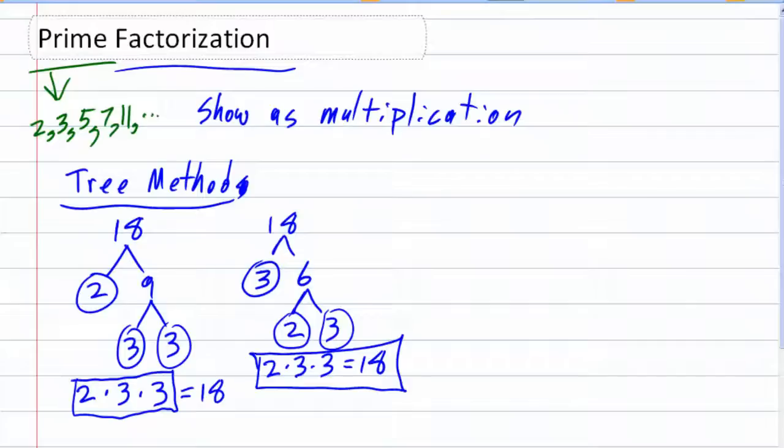One last example: let's take a look at the number 60. There are several ways that we could start here to branch it out into two numbers that multiply to give us 60. Since it's an even number, sometimes it's easiest just to pick 2, and 2 times 30 in this case gives us 60. 2 is a prime number.